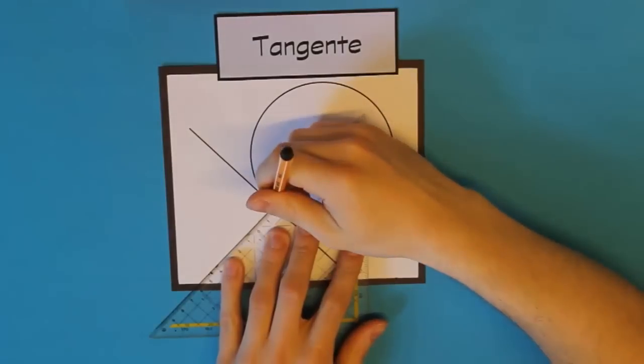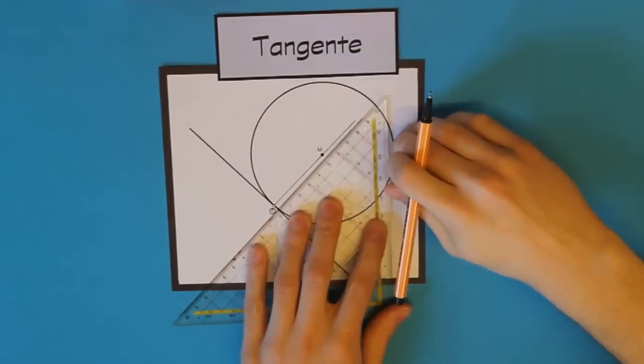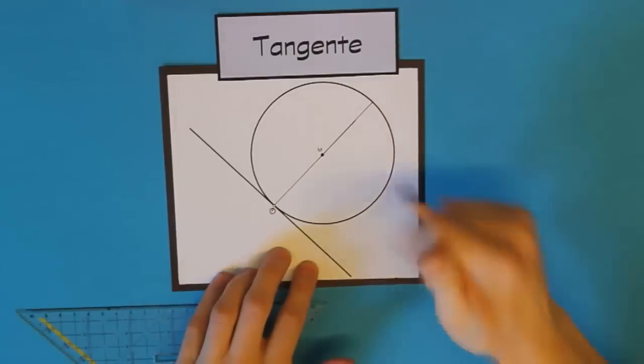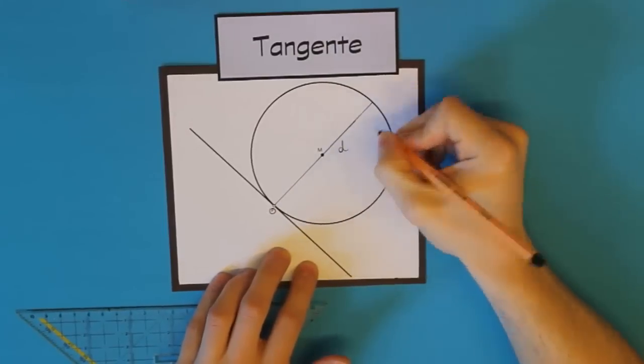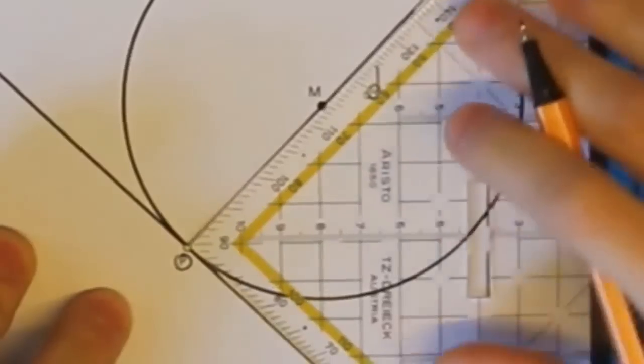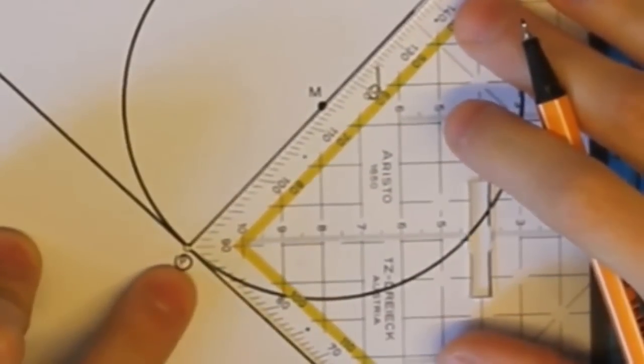Wenn wir jetzt den Durchmesser einzeichnen, der im Berührpunkt P endet, dann hat dieser Durchmesser eine ganz besondere Lage zur Tangente. Vielleicht seht ihr es bereits. Falls nicht, dann lege ich hier den rechten Winkel des Dreiecks an.